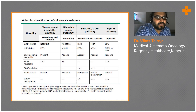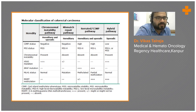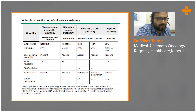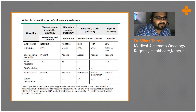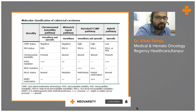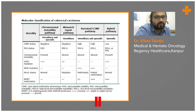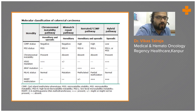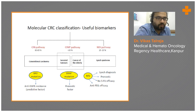The third pathway is the serrated or CIMP pathway, where CIMP is high. MSI status is high or low depending on whether it is hereditary or sporadic. BRAF mutation is the most characteristic finding, and MLH1 methylation is either partial or complete. MGMT methylation is also common. If a case does not fit any of these three categories — with low CIMP, low MSI, chromosomal instability, KRAS mutation, and MGMT methylation — it falls into the hybrid pathway, which is most commonly sporadic.